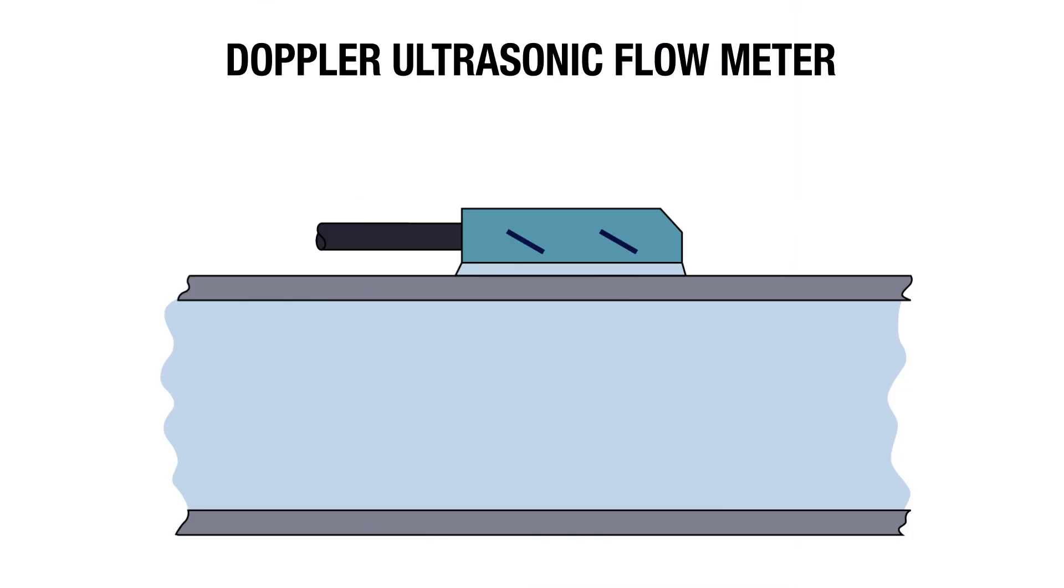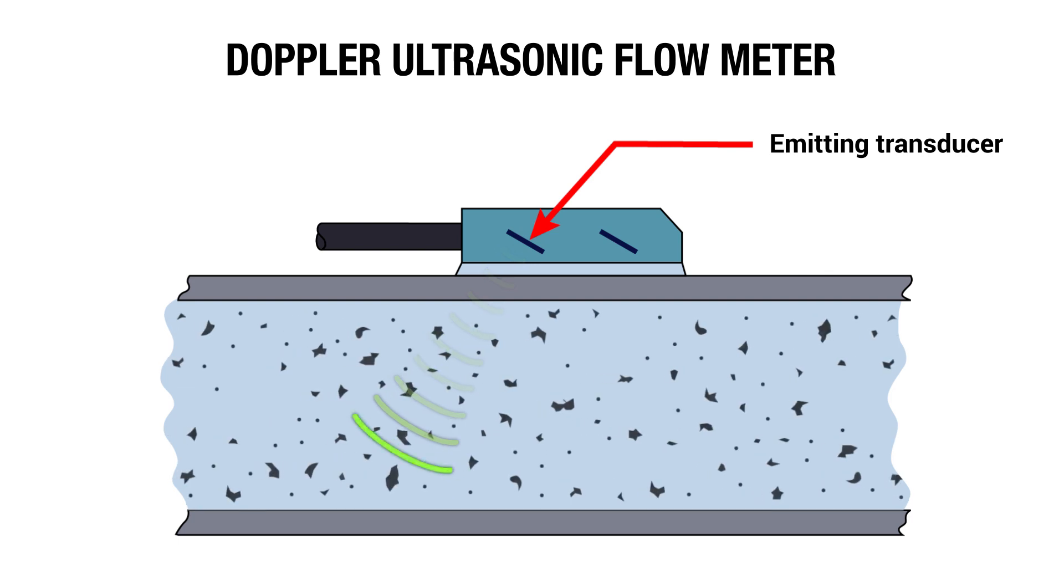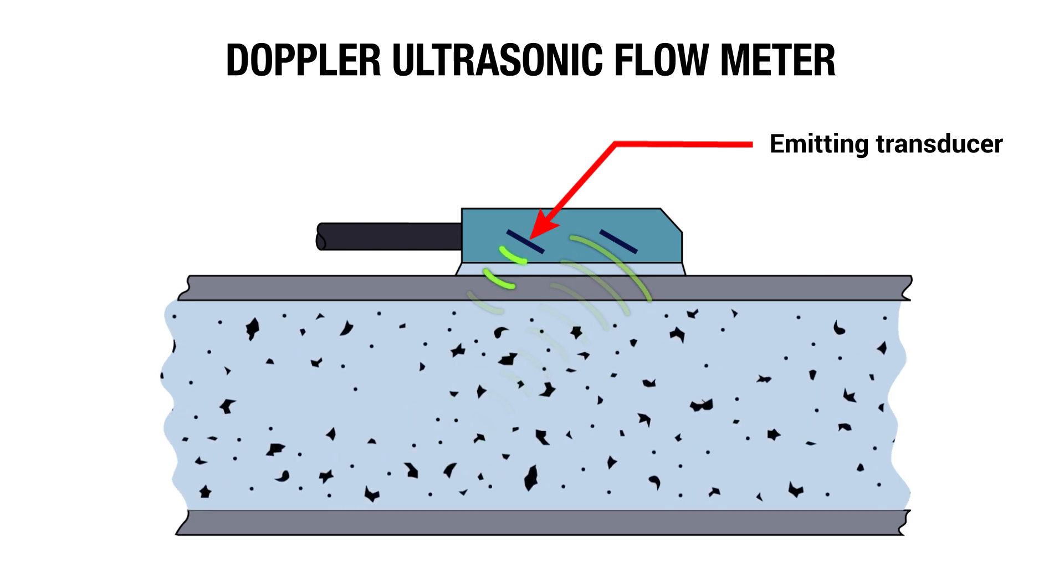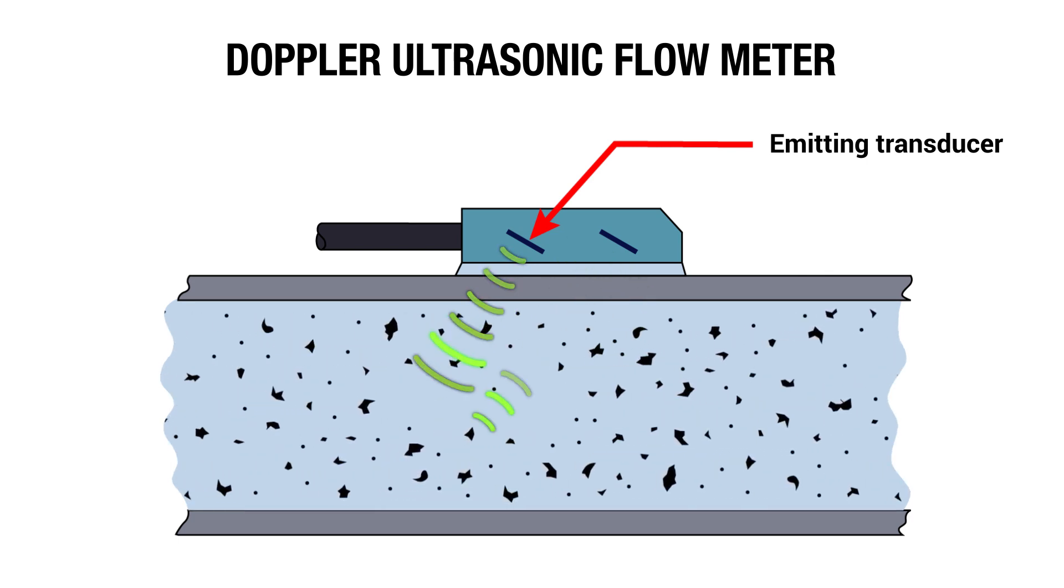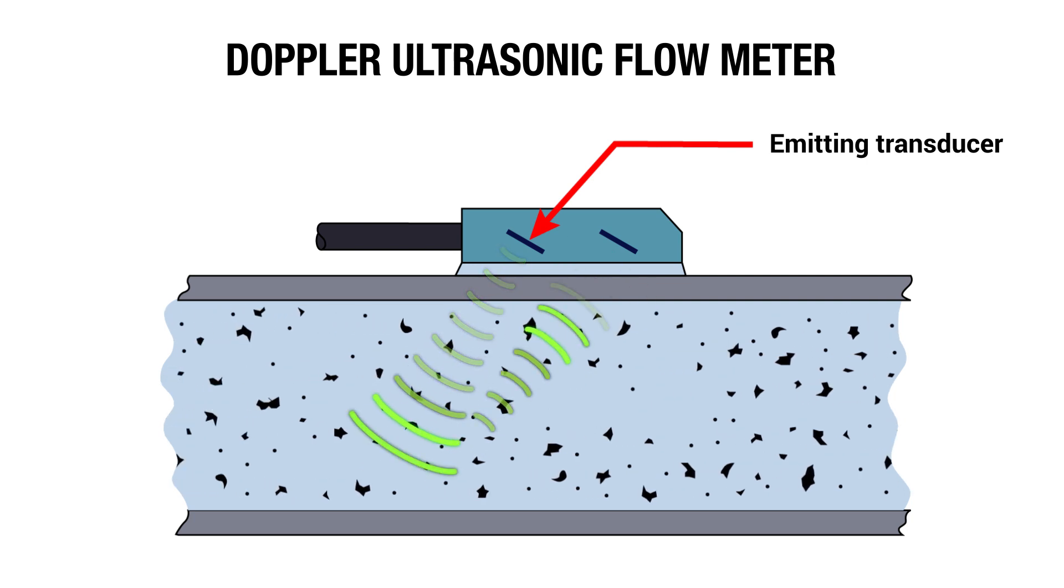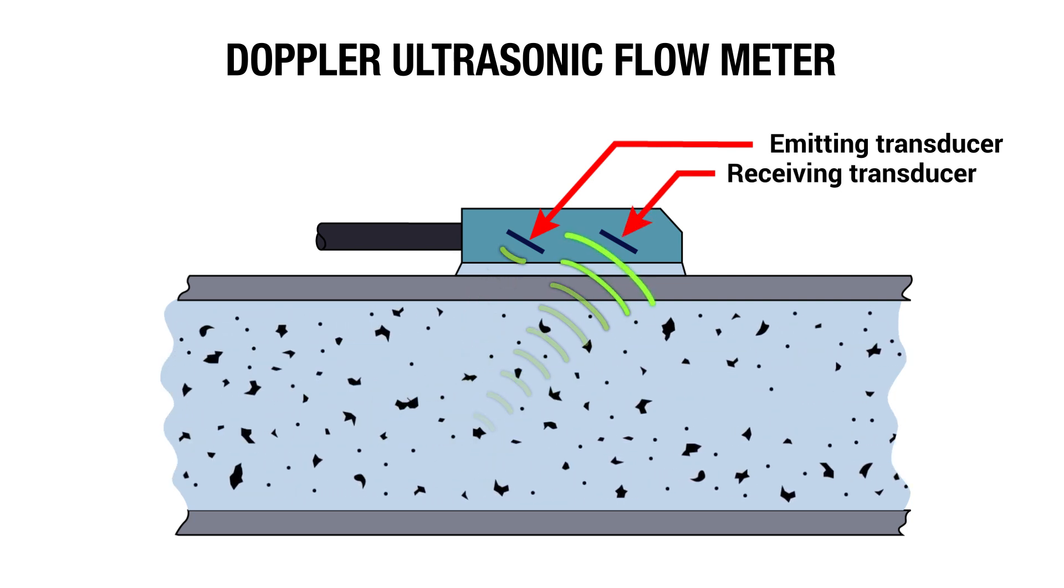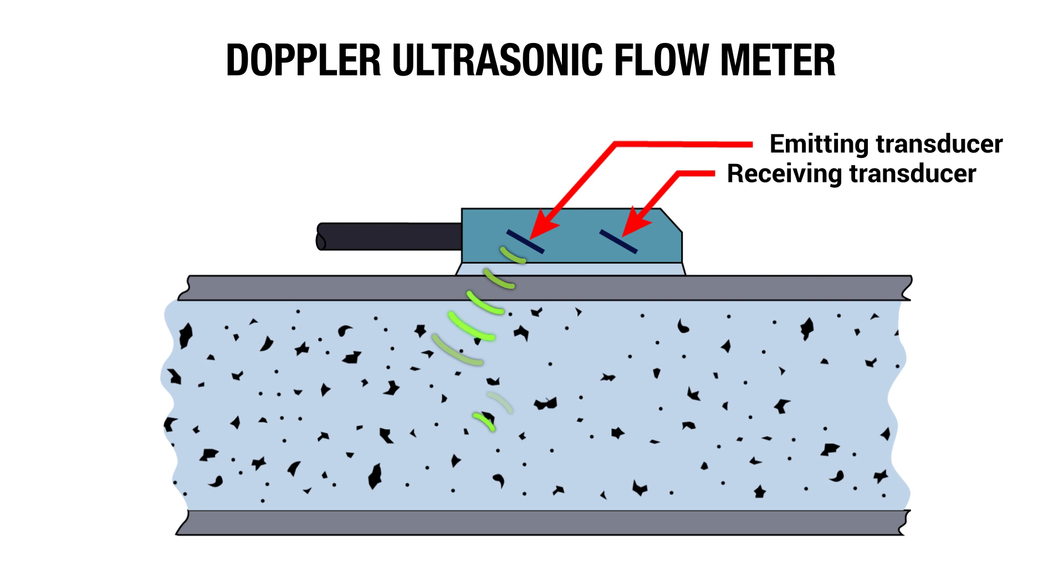A Doppler ultrasonic flow meter uses a transducer to emit an ultrasonic beam into the stream of fluid flowing through a pipe. In order for a Doppler flow meter to operate, there must be solid particles or air bubbles moving through the stream that will reflect the ultrasonic beam. The motion of particles shifts the frequency of the beam, which is received by a second transducer. The frequency shift is linearly proportional to the flow rate.